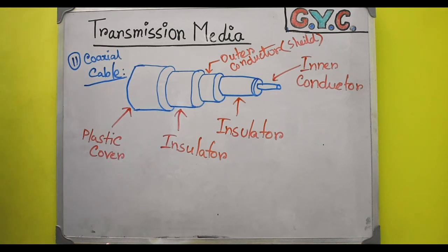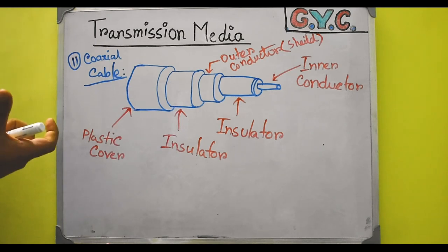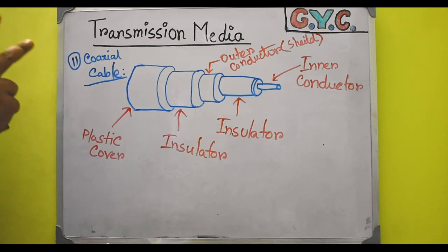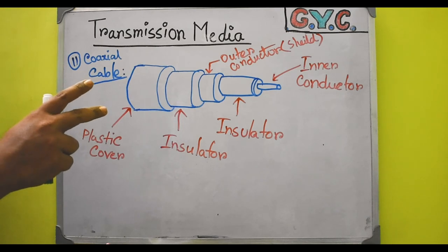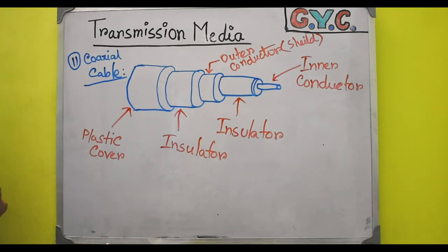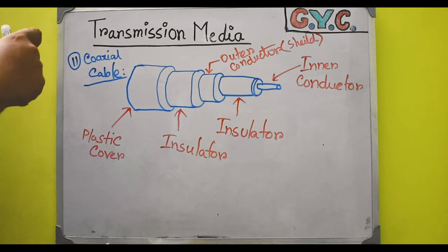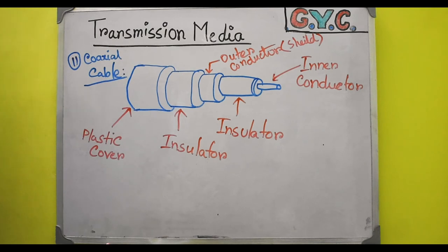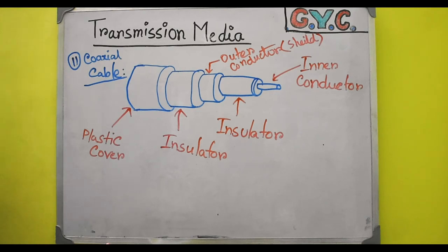So in twisted pair cable there were two conductors, two insulations, and a plastic cover. What we have done in coaxial cable is combine those two cables into one. This is how the coaxial cable is designed — so that we can remove the use of two wires and implement the same function that twisted pair cable can do, but in a single cable.